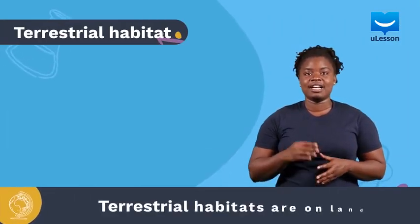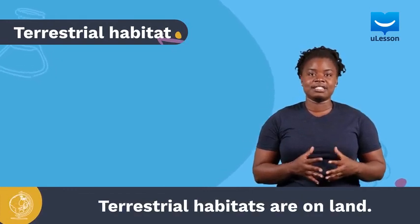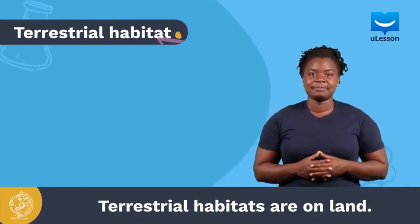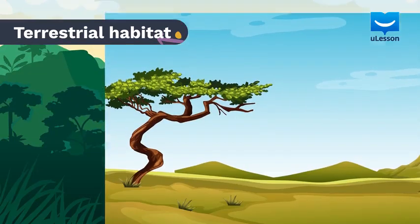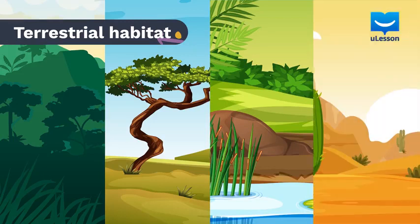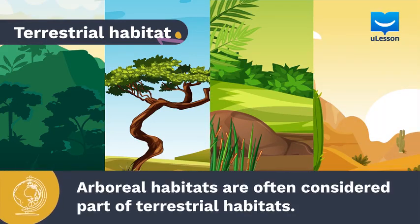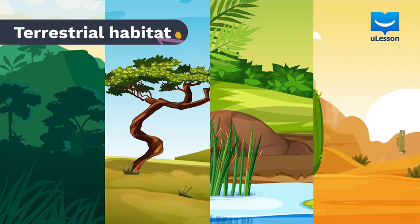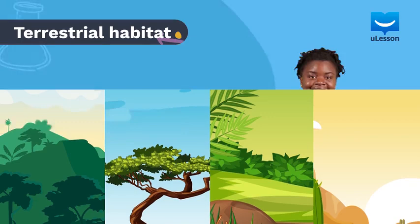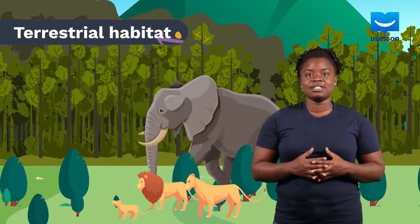Terrestrial habitats are on land and there are several plants and animals that live on land. Terrestrial habitats include forests, grasslands, marshes, and deserts. Arboreal habitats, like the top of trees, are often considered part of terrestrial habitats because the trees that arboreal animals like birds and monkeys live on and carry out their activities are rooted on land.